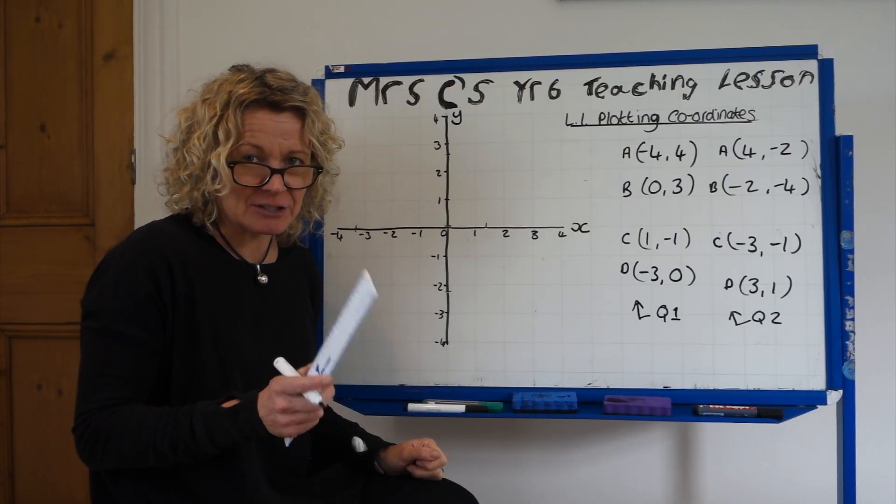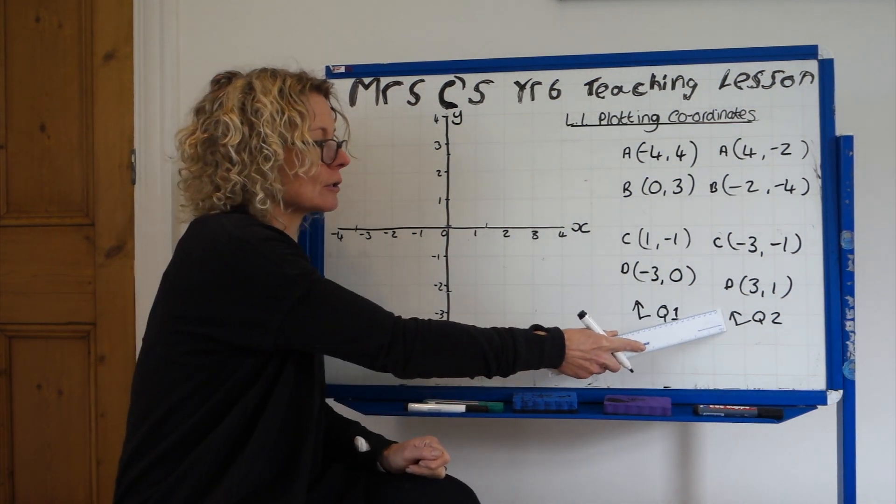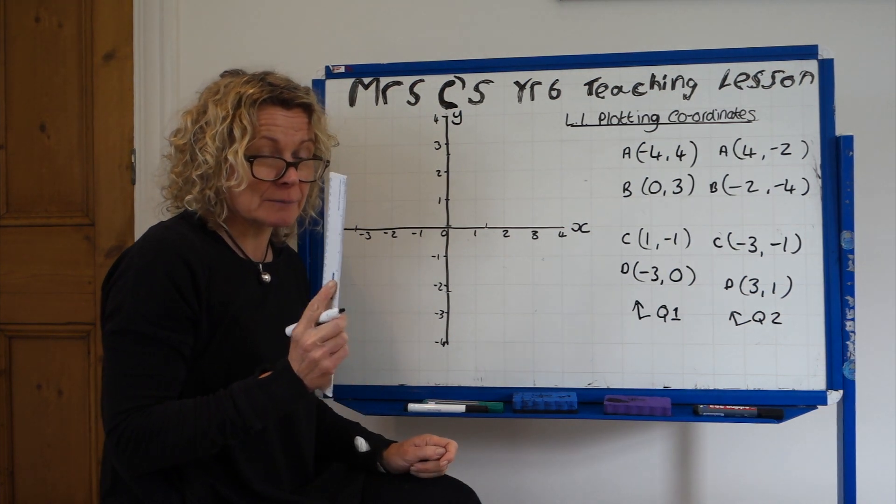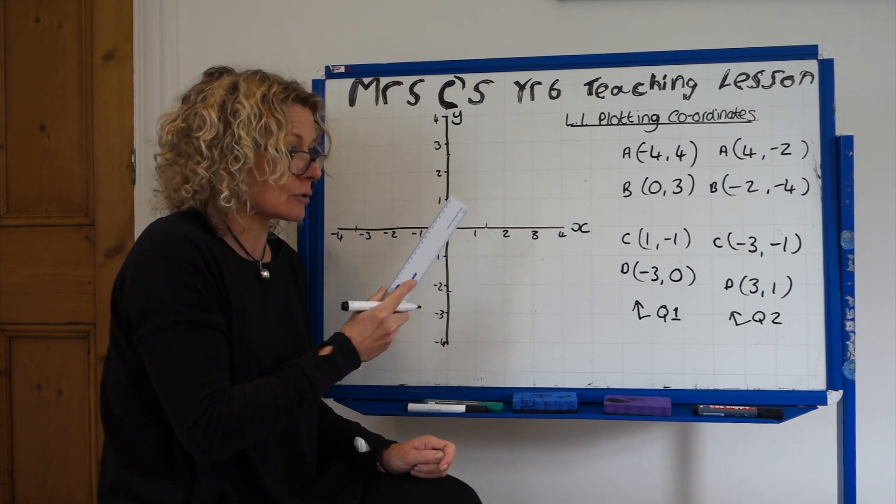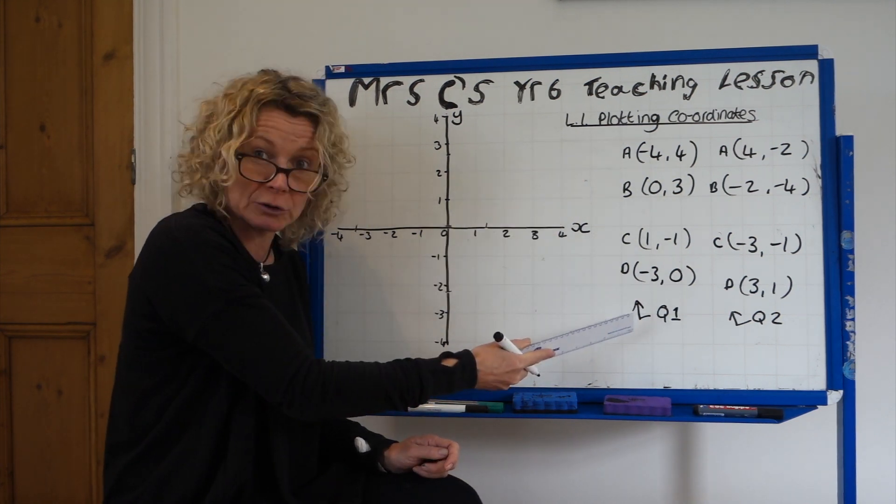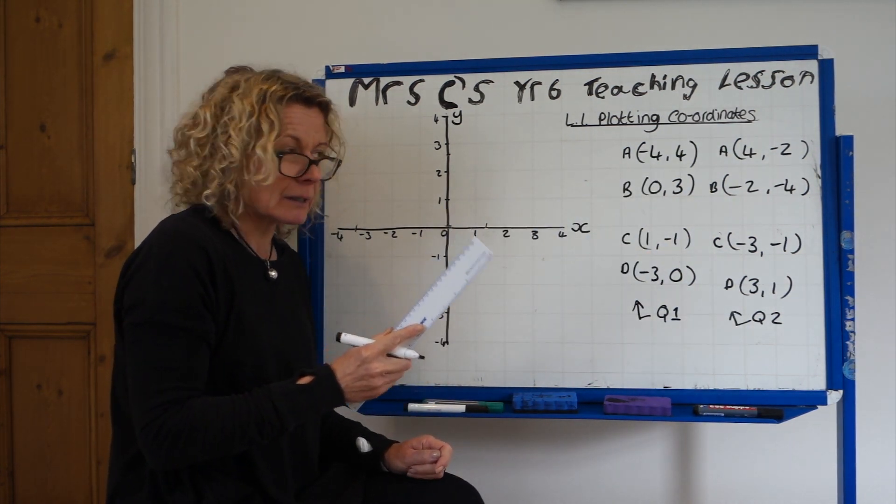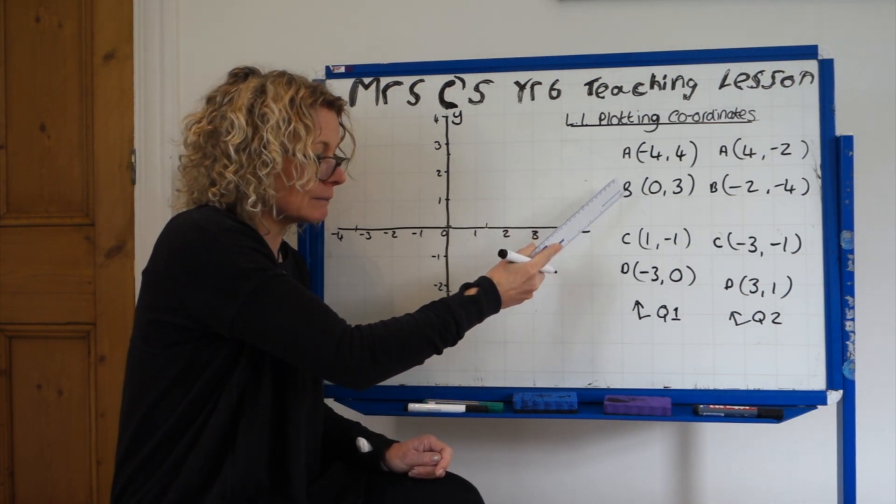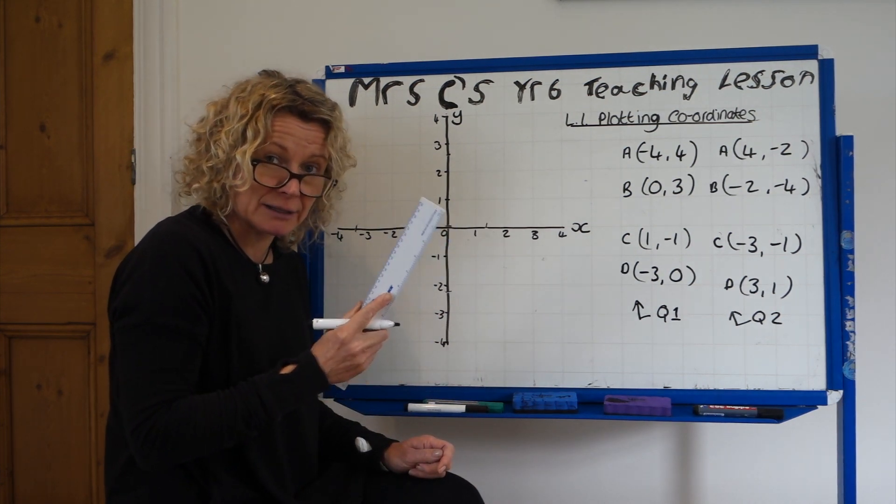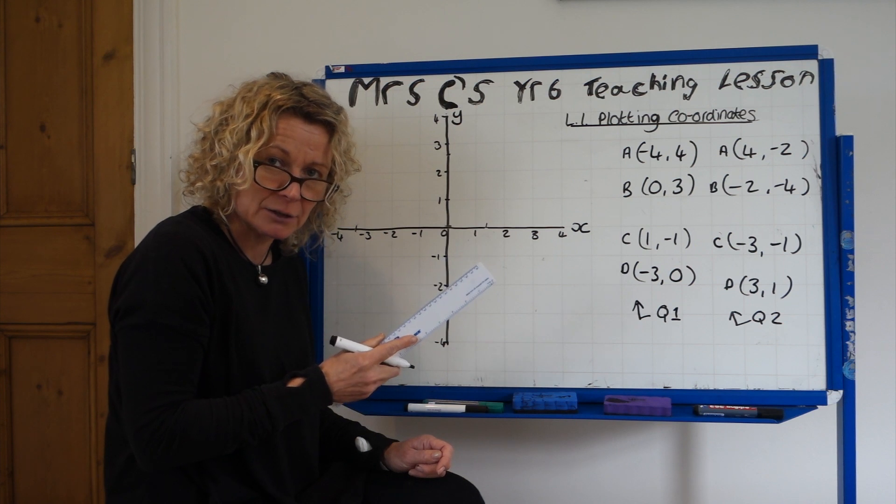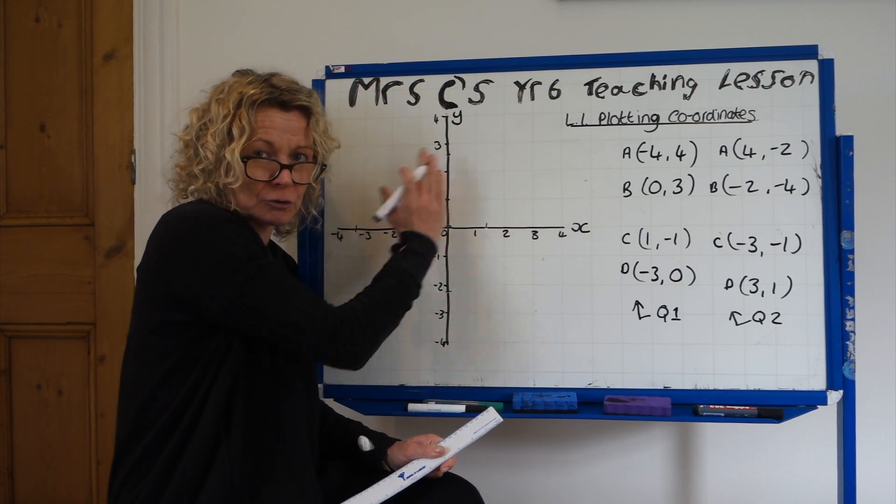So we are ready to plot some more coordinates. I have set up question 1 and question 2 here. So you're going to be making two different shapes on the same quadrant graph. You could maybe do question 1 in one colour, coloured pencil, and question 2 in another colour. That's what I'm going to do. I'd like you to label each corner of the shape that you create. And I will share the answers with you at the start of tomorrow's lesson, which is going to be on translation. Translation on a quadrant grid.